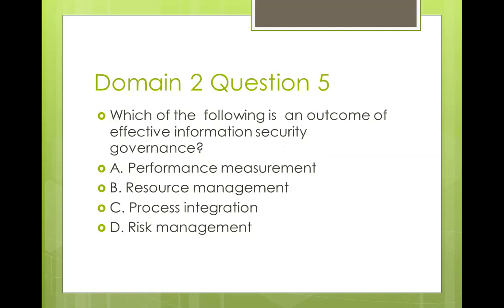Question five: which of the following is an outcome of effective information security governance? A) Performance measurement, B) resource management, C) process integration, D) risk management. These are textbook questions from the CISA review manual, and ISACA has the right to pick questions from it, which is why it's good to study the review manual. A, B, and C are enablers — you need to measure performance, manage resources, and integrate your assurance function. But the outcome of information security governance is risk management; your risk profile will be in sync with your residual risk. The answer is D.